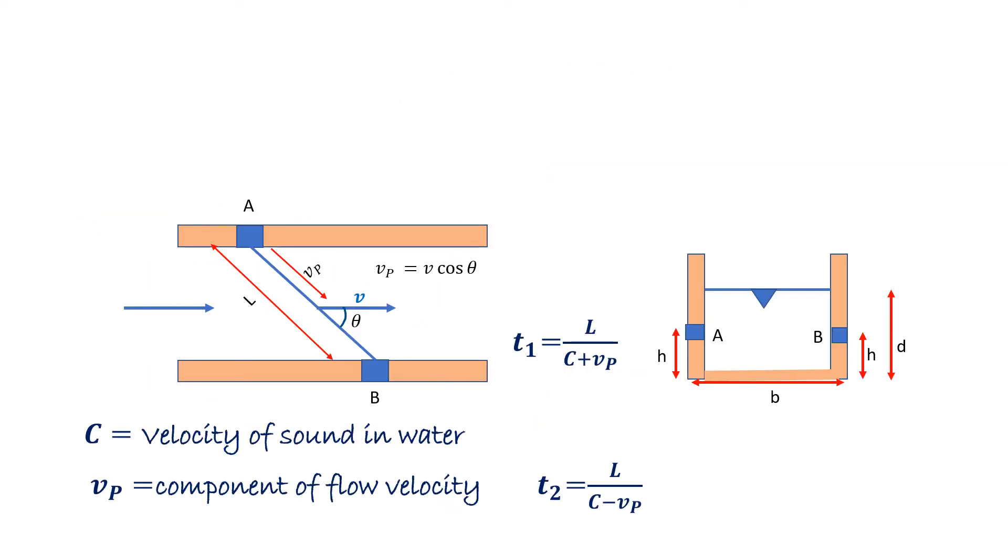So let's suppose this is a river and this is flowing in this way and velocity of flow is V. Cross section of this river is shown here. B is the width of this river. D is the water level.